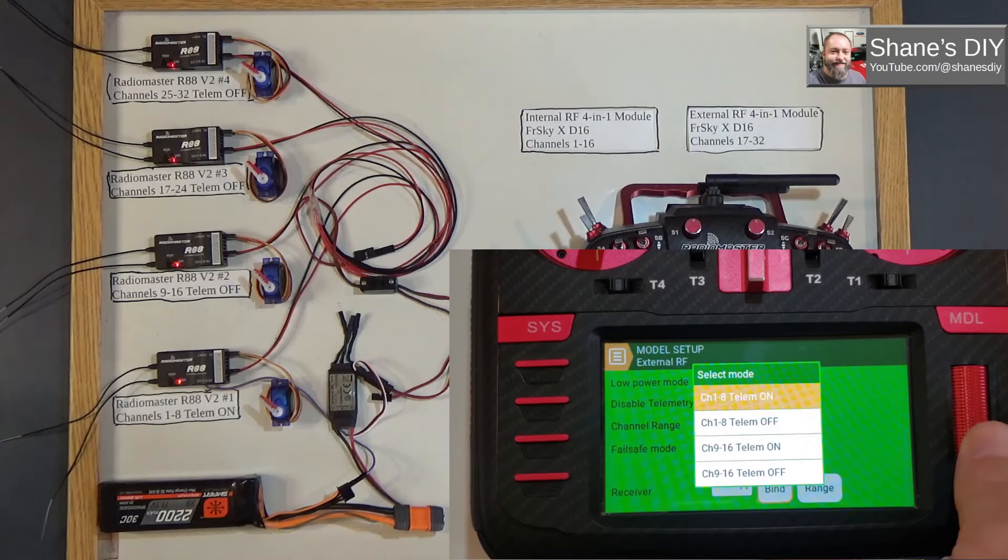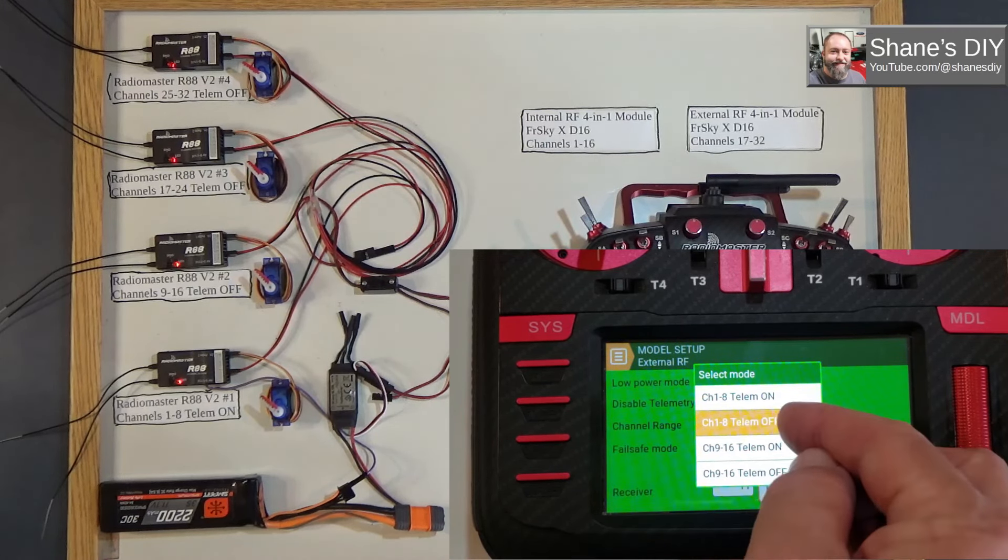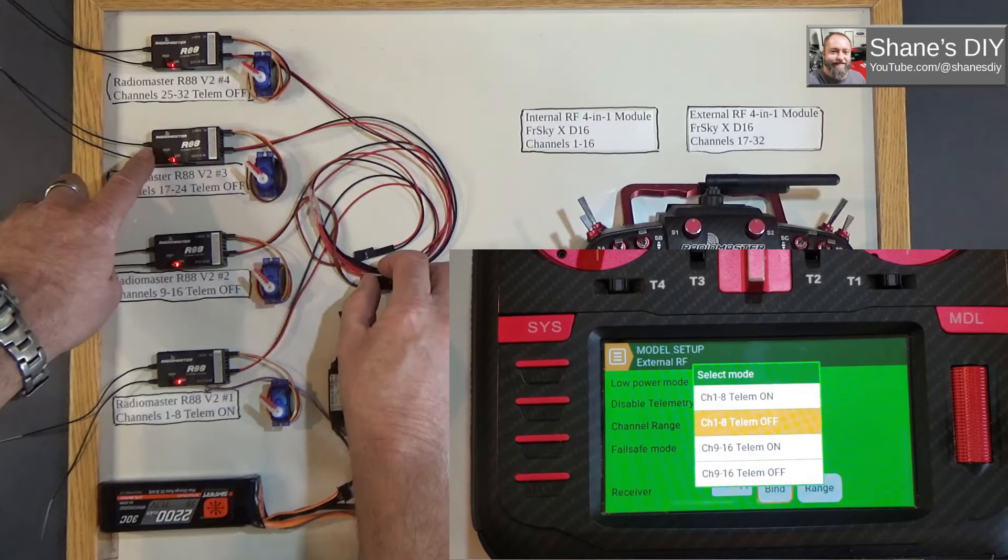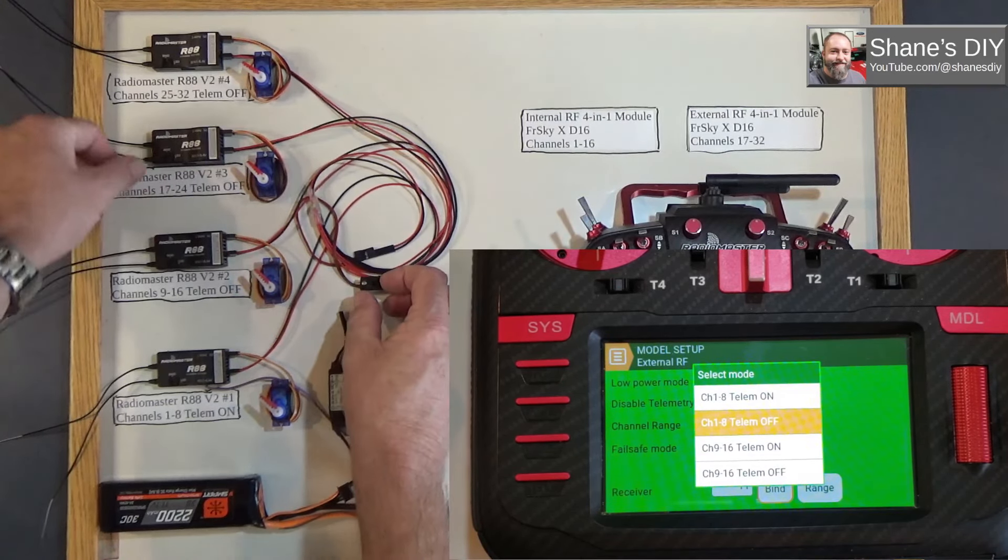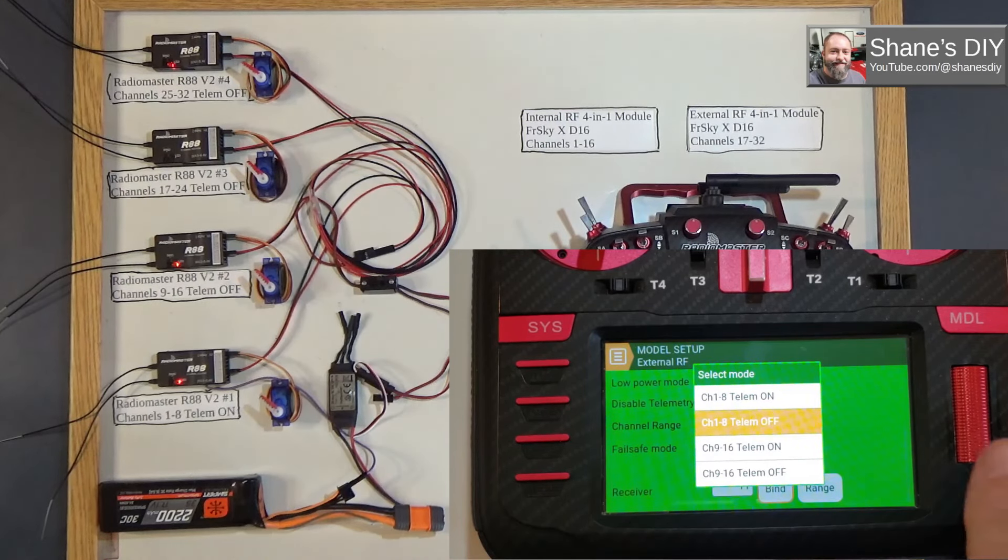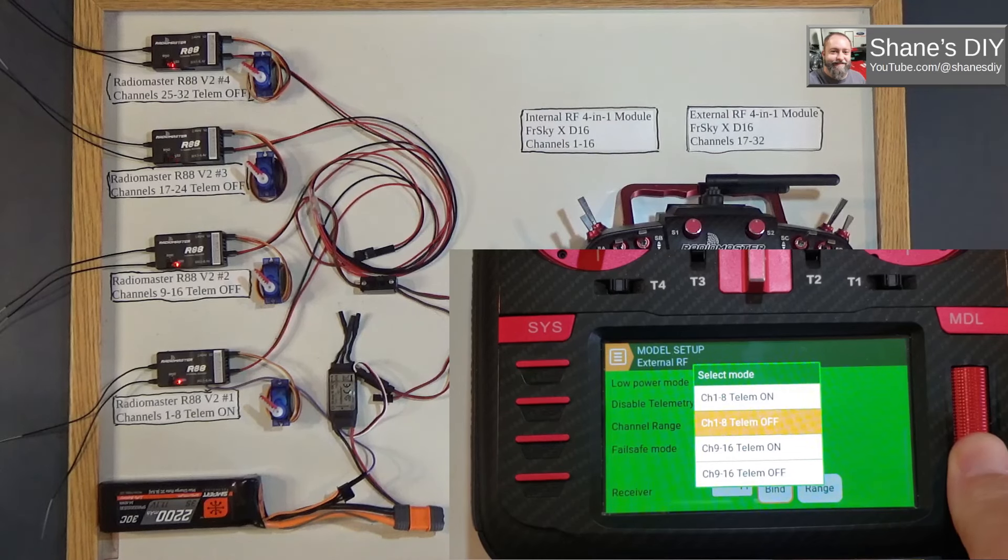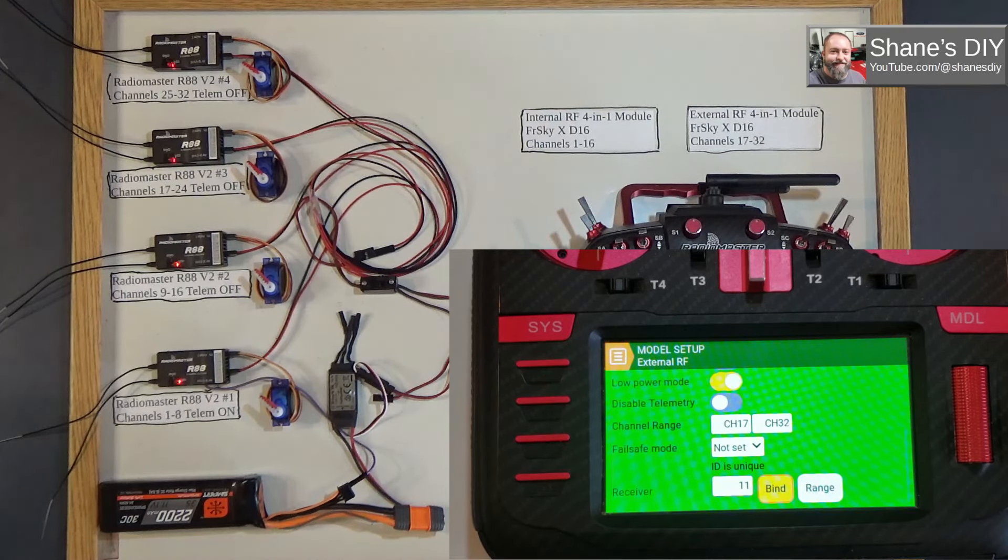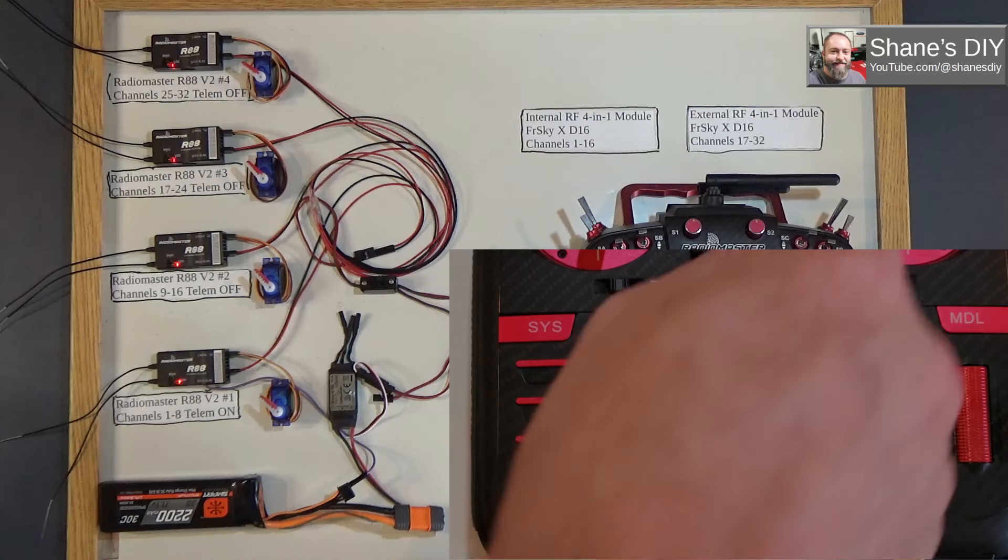What I'm going to do, instead of telemetry on, I'm going to do 1 to 8 telemetry off for receiver number three. Let's power it off. Put this one in bind mode. As soon as I get the two blinks, I'll hit the button and we'll bind up to that one. Now I'm rebound to that. SC, you can see, will move channel 24.